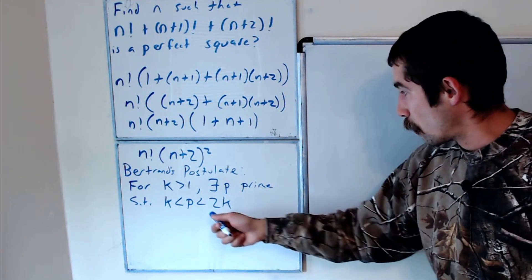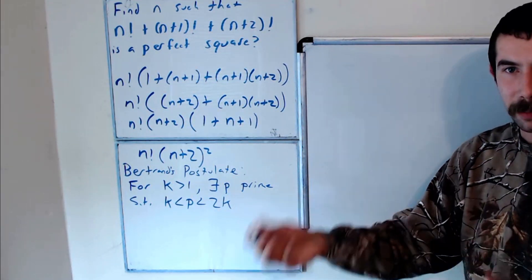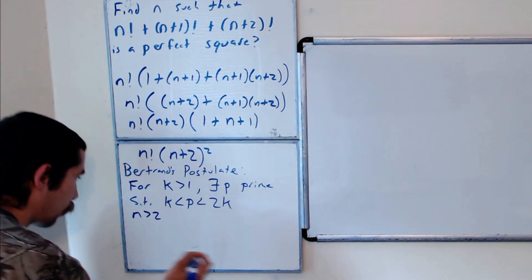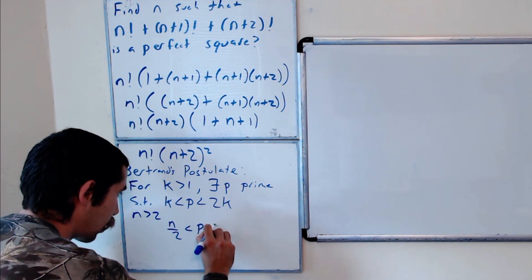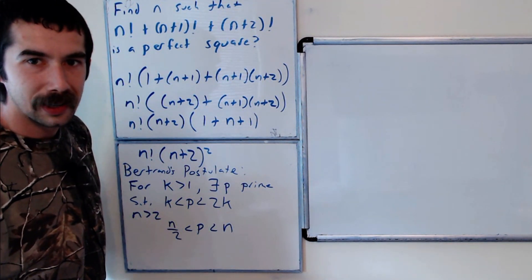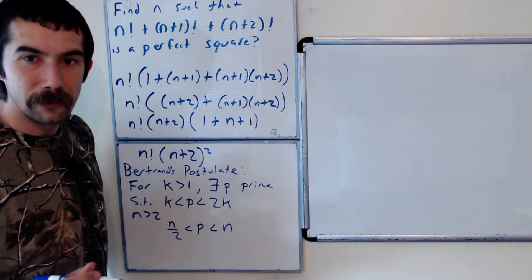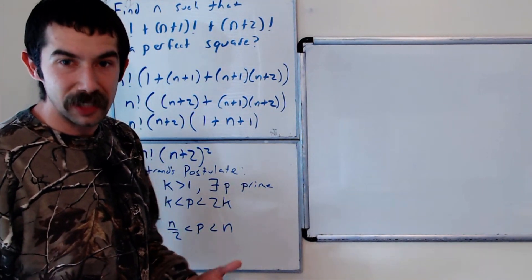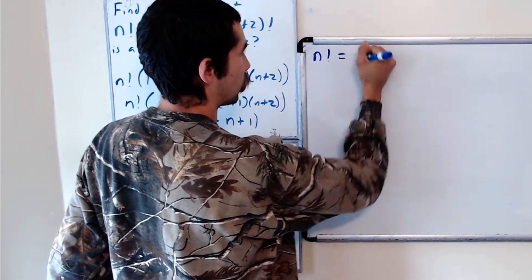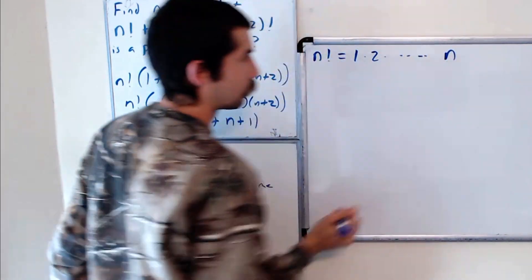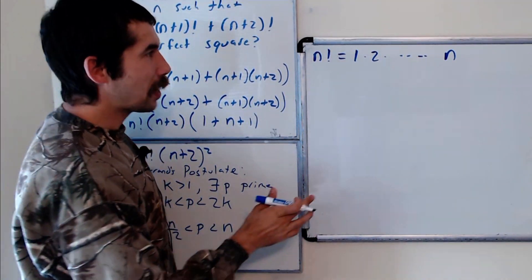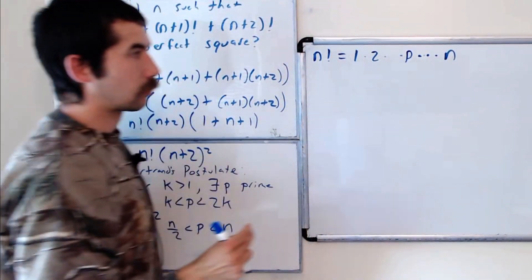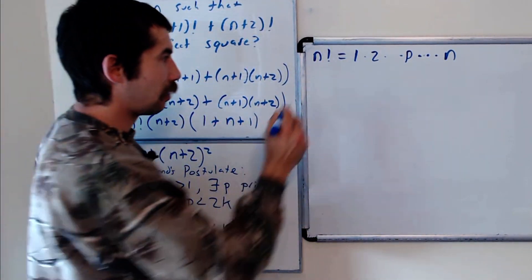We're going to use Bertrand's Postulate, but instead of 2k we'll substitute 2k equals n. So we can rewrite this as: for n greater than 2, there's a prime between n/2 and n. Now, if n factorial were a perfect square, then this prime p would divide into it an even number of times. We know n factorial equals 1 times 2 times all the way up to n, and there's some prime p somewhere in this product.